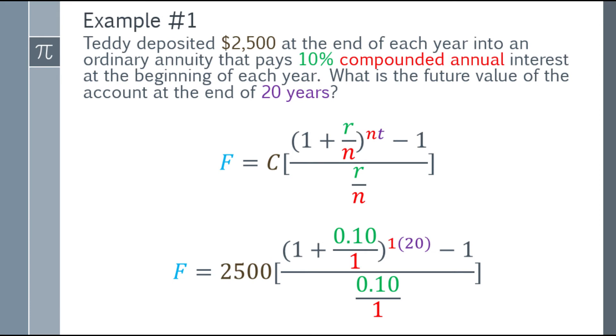After that, substitute the values. C is 2,500, the cash flow every end of each year. In the numerator, we have 1 plus r over n. R is 10%, which is 0.1. N is 1 since it's compounded annually, so 0.10 over 1. The exponent is n times t, which is 1 times 20. Then subtract 1. Denominator is r over n, which is 0.10 over 1.